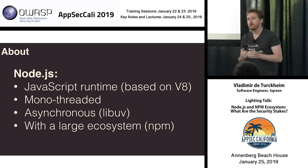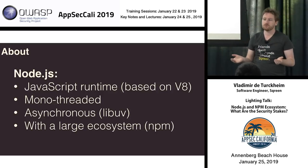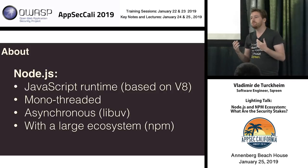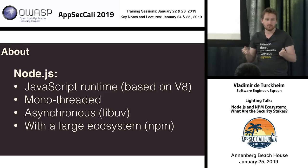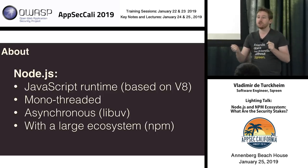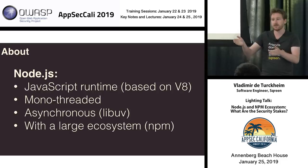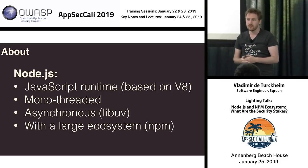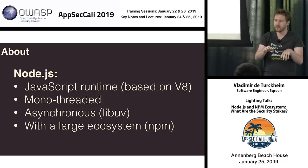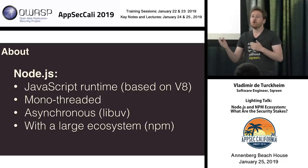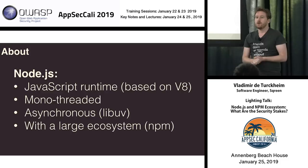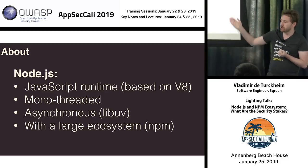Node.js has one specificity: it's monothreaded. You have only one thread for the whole JavaScript process, meaning you can do only one thing at a time. In a Java web server, each HTTP request creates a new thread. In Node.js, you've got a mono thread where everything happens. So the question is, how can Node.js handle more than one HTTP request at a time? That's why Node.js is asynchronous by default.